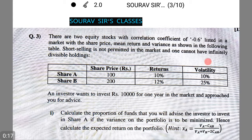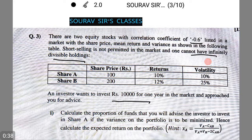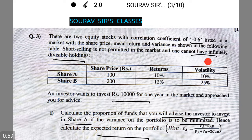There are two equity stocks with a correlation coefficient of minus 0.6 listed in the market, with share price, mean return, and variance as shown in the following table. Short selling is not permitted in the market and one cannot have infinitely divisible holdings. An investor wants to invest rupees 10,000 for one year in the market and approached you for advice. We need to calculate the proportion of funds to invest in share A to minimize portfolio variance, and also calculate the expected return of the portfolio.